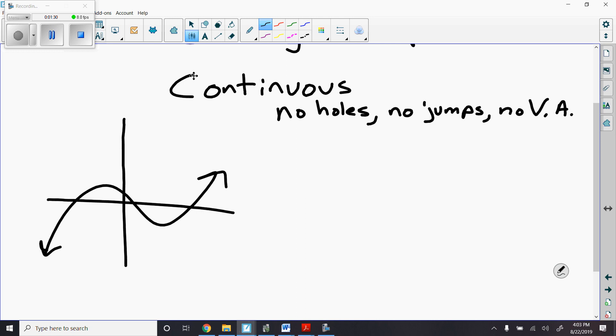Okay. So, here's another example of a graph that's continuous. So, that graph continues unbroken forever. Here's another one.